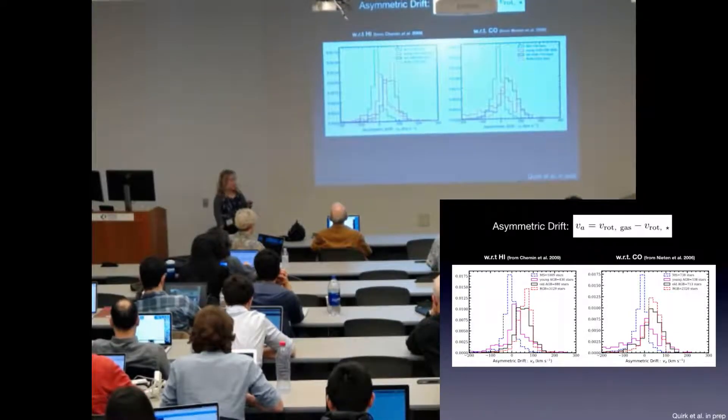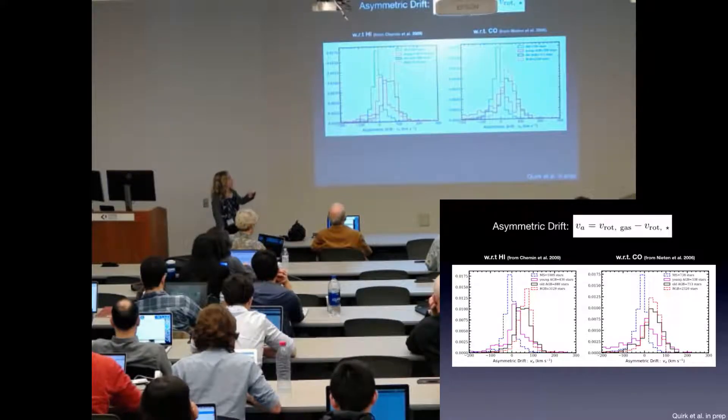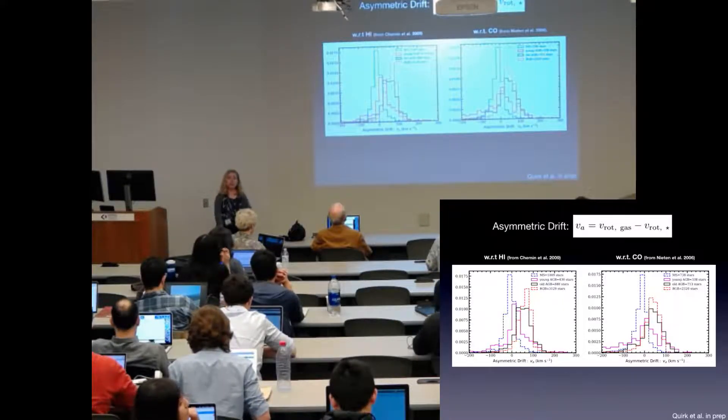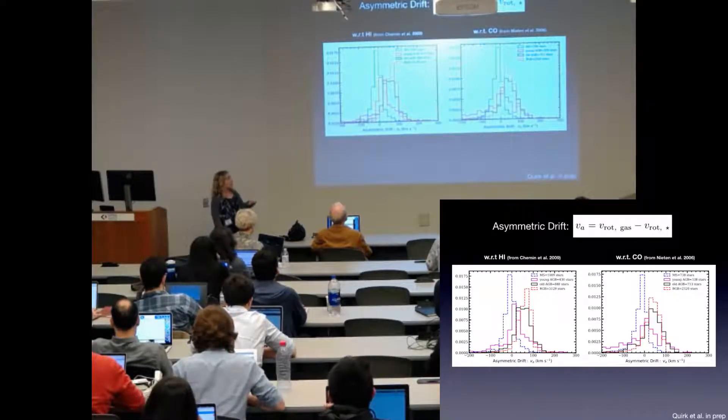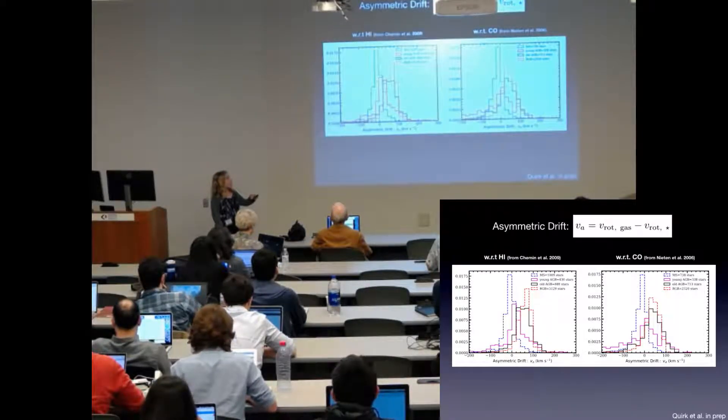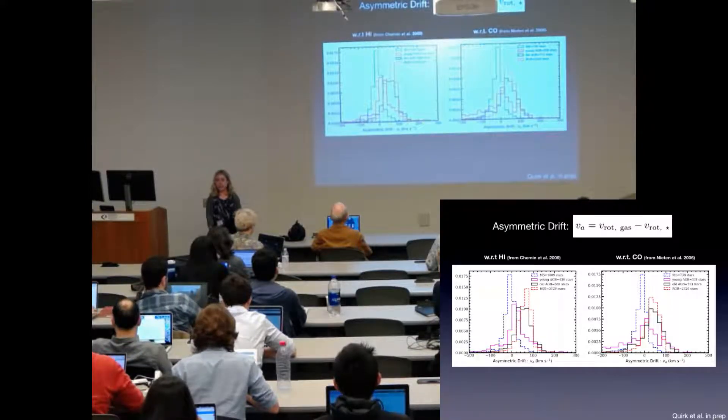I've plotted the distributions of asymmetric drift for each of the stellar populations seen here. The left panel is asymmetric drift with respect to the neutral gas, and the right panel is with respect to the molecular gas. I've defined asymmetric drift as the difference between the gas rotation speed and the stellar rotation speed.